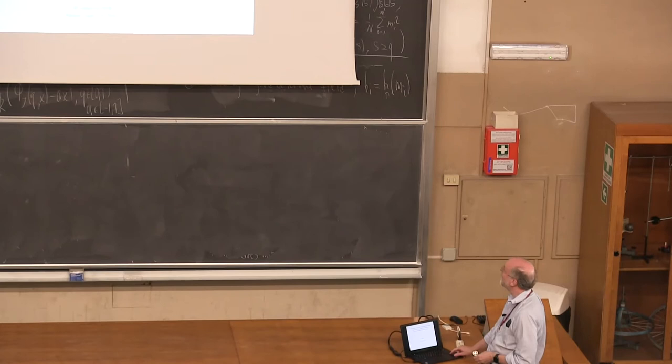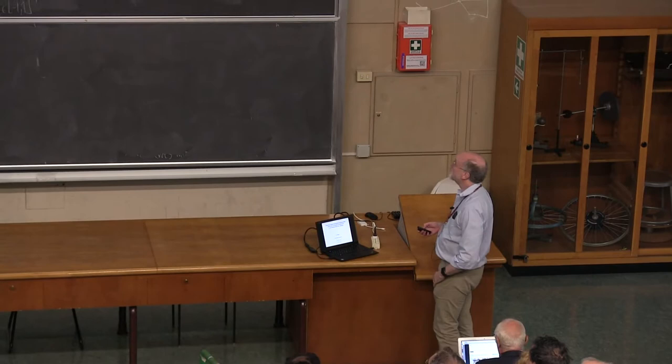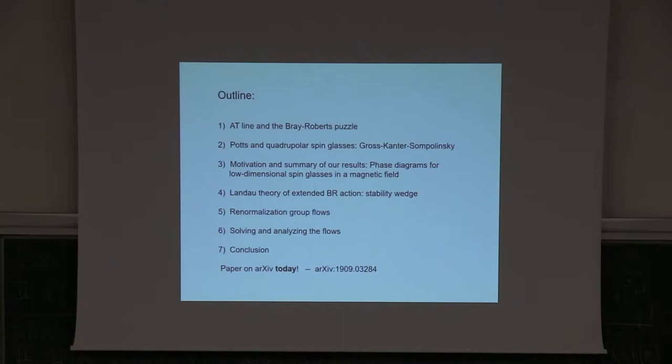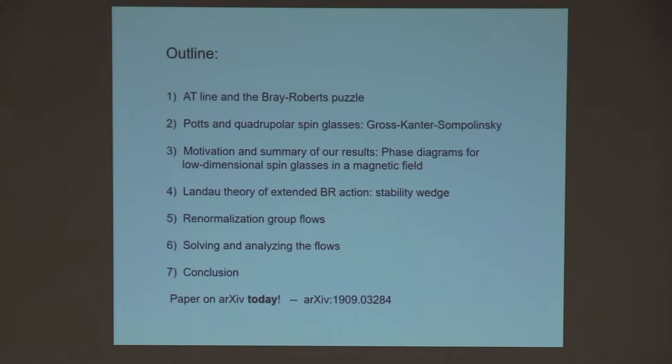So I'm going to talk about the Almeida-Thaulis line in low-dimensional spin glasses. It's an old topic that precedes replica symmetry breaking. This is a little outline. I'm going to first do a bit of background and motivation, talk slightly about mean field in POTS and quadrupolar, then discuss our phase diagrams. The results will be described in the middle, and the last bit will be some of the more technical details of how we get these results.